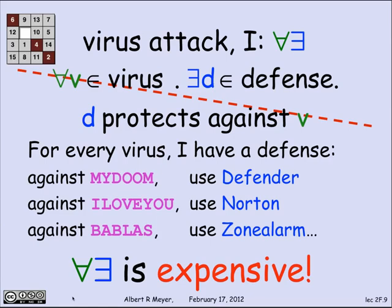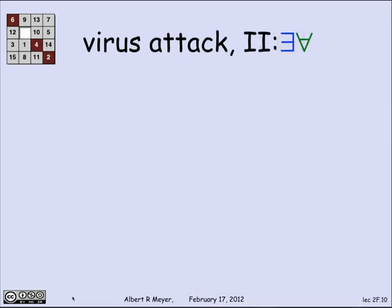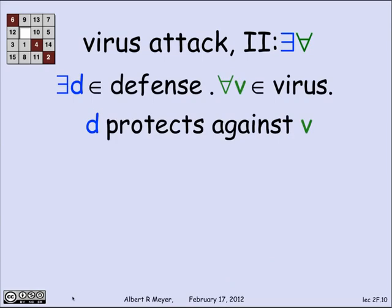This is not what we want. So that's when for every virus, there's a defense, but the quantifiers are in the wrong order. Let's reverse them. Suppose I tell you that there's one defense that's good for all viruses. There is a defense such that for every virus, d protects against v.